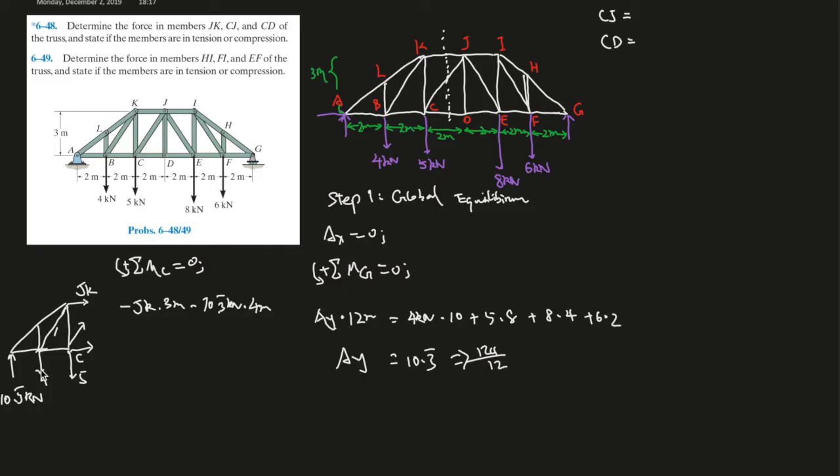So sum of the moments at C. Always write this down so you know what you're doing, because trusses can really mess you up. It's not hard, it's just the amount, the quantity of work. So going counterclockwise is the positive direction, so JK times 3 meters. It's going to the negative, so it's minus. This force is going this direction.